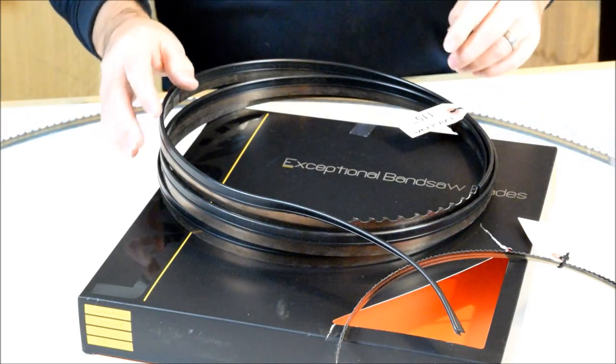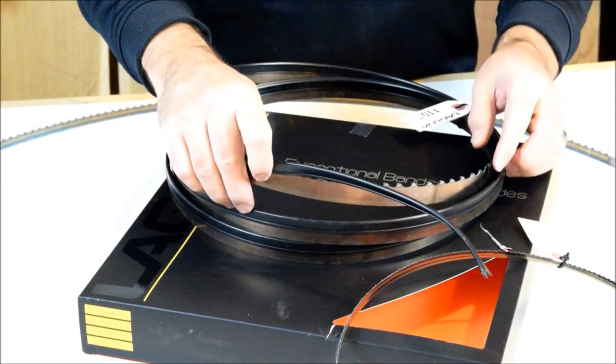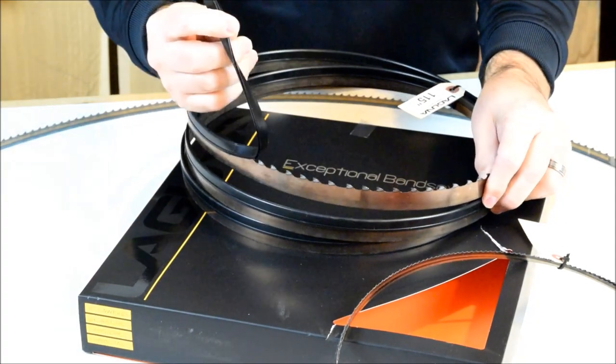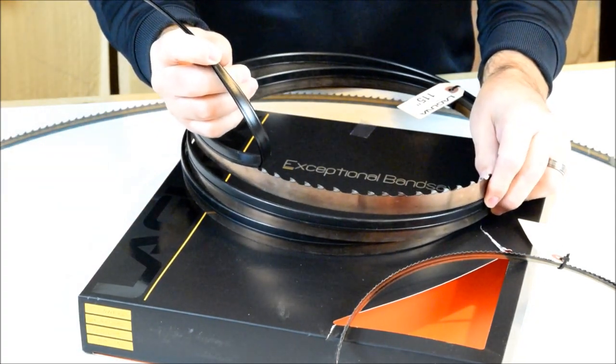But today I want to look at a special blade. It's a resawing carbide tip blade. So we're going to put that on the saw and see how it performs.